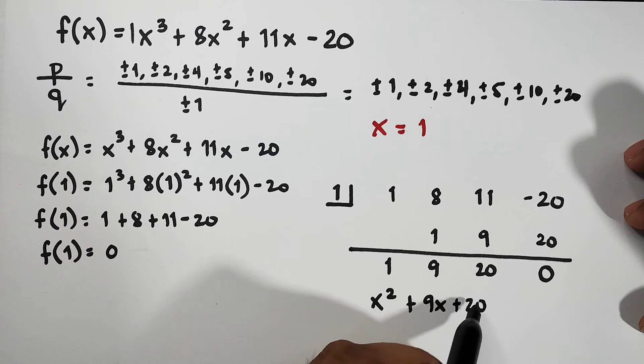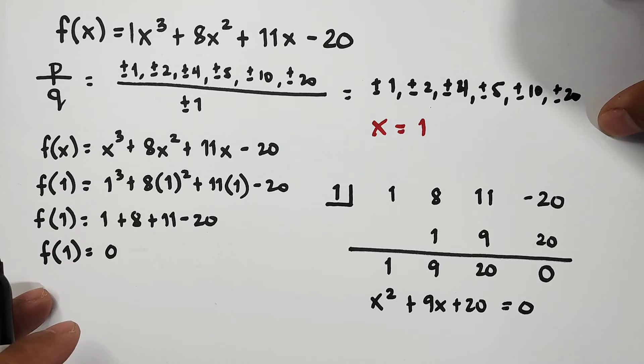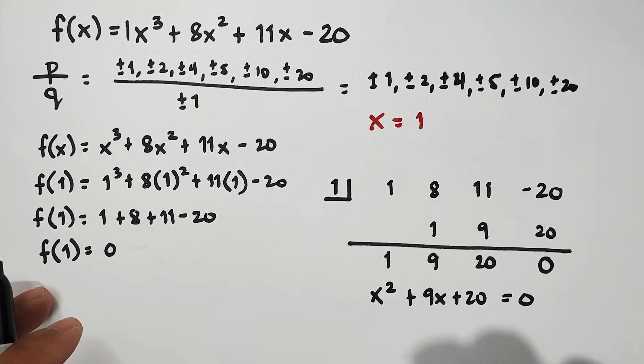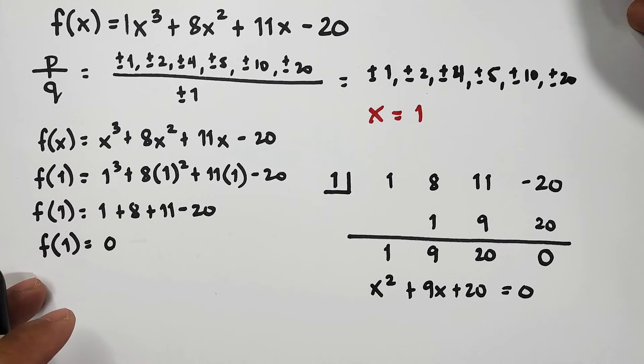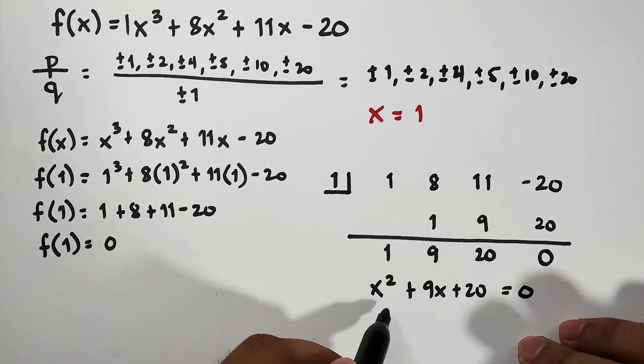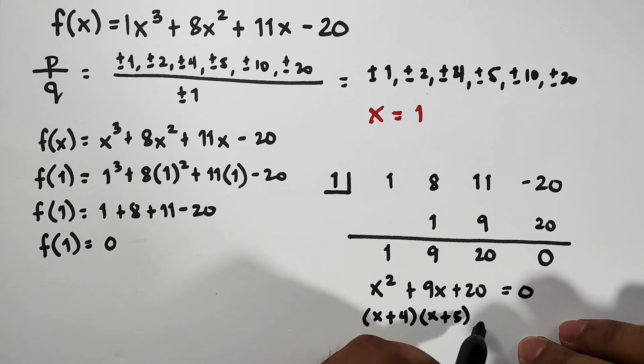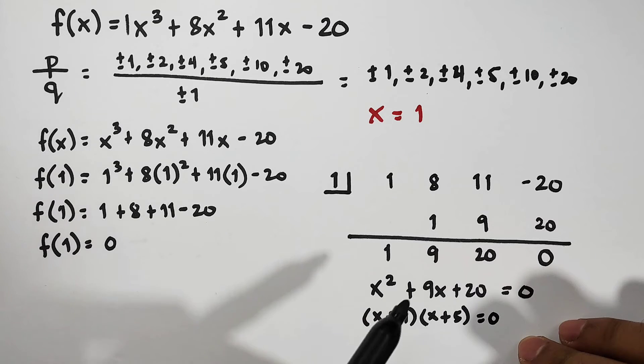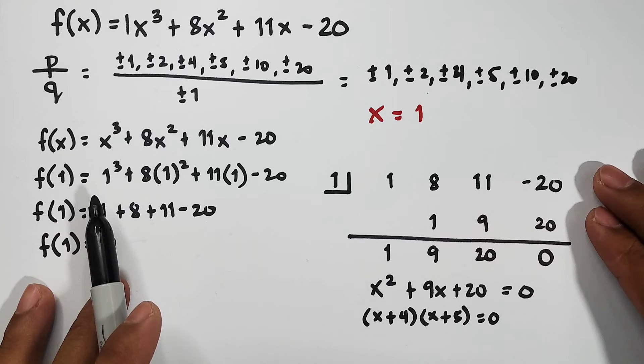So this will be our equation now. As you can see, this equation is quadratic. Let me move this a little bit. This one is quadratic wherein we can factor out this quadratic equation and it will become (x + 4)(x + 5) = 0. Where did we get the 4 and 5? Factors of 20, and the sum is 9.